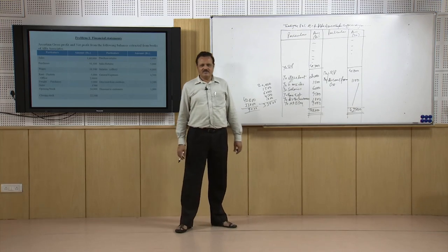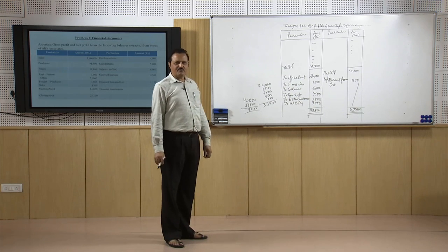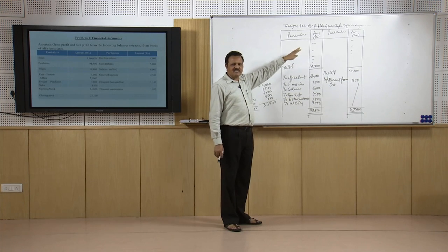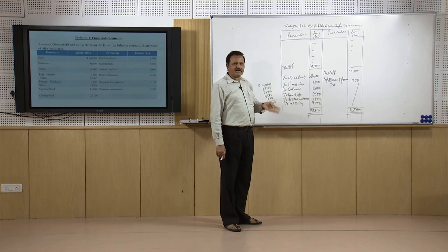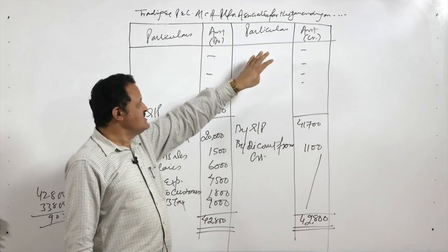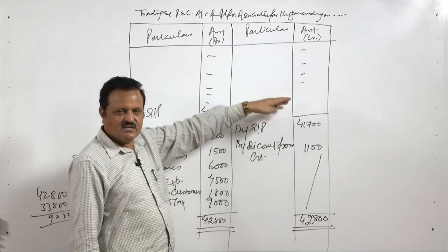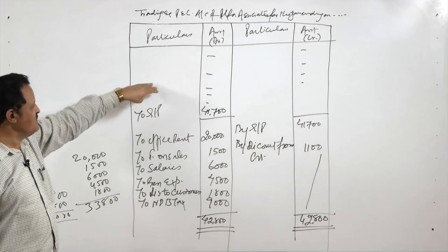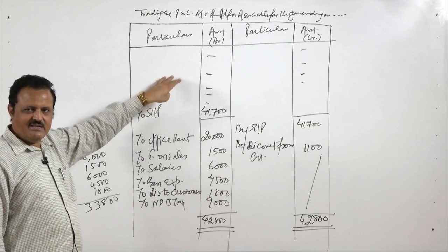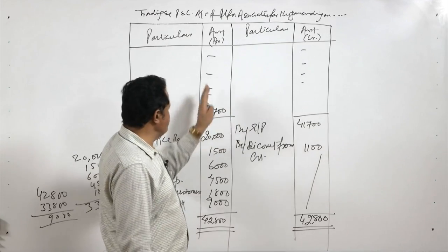This is how we prepare the trading and profit and loss account — it has two parts. The first part is the trading account, which explains direct incomes from the business: sales, sales returns, and closing stock on the income side; raw material, wages, and other direct expenses on the expense side. The difference — income minus expenses — is the gross profit.